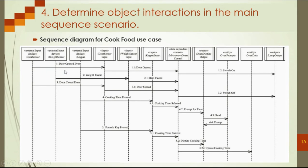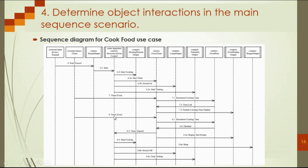We take the first message to explain how the sequence diagram and the state chart diagram work together. We have many messages or events — number one, two, three, four, five, six, seven, eight — and in each one there is one control object, the 'control oven', that controls the other messages.